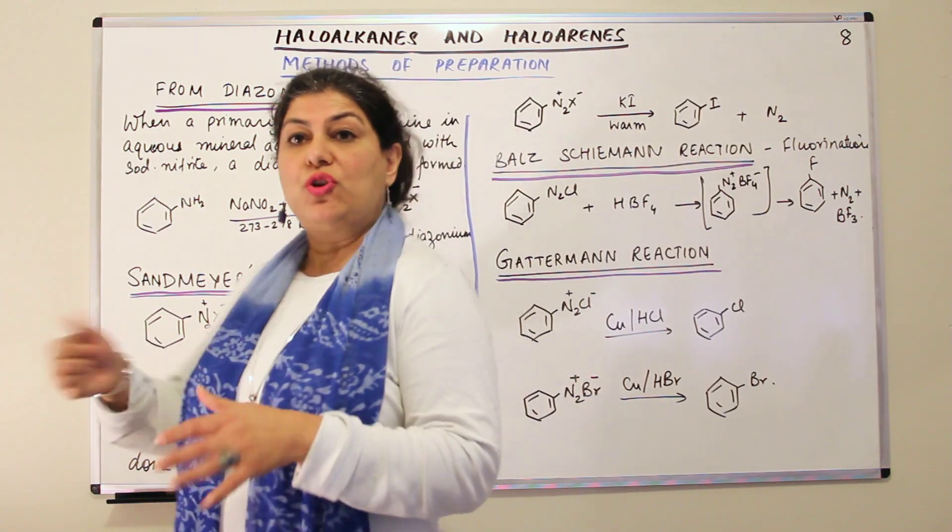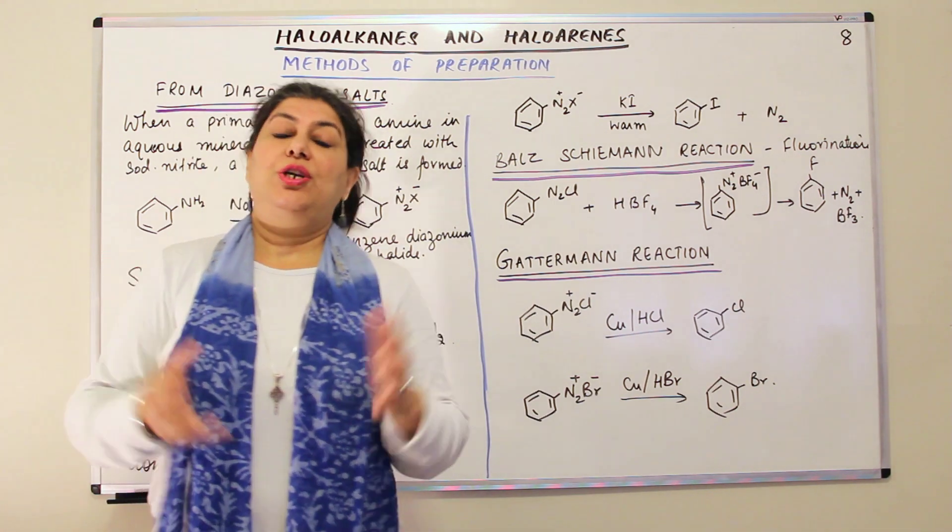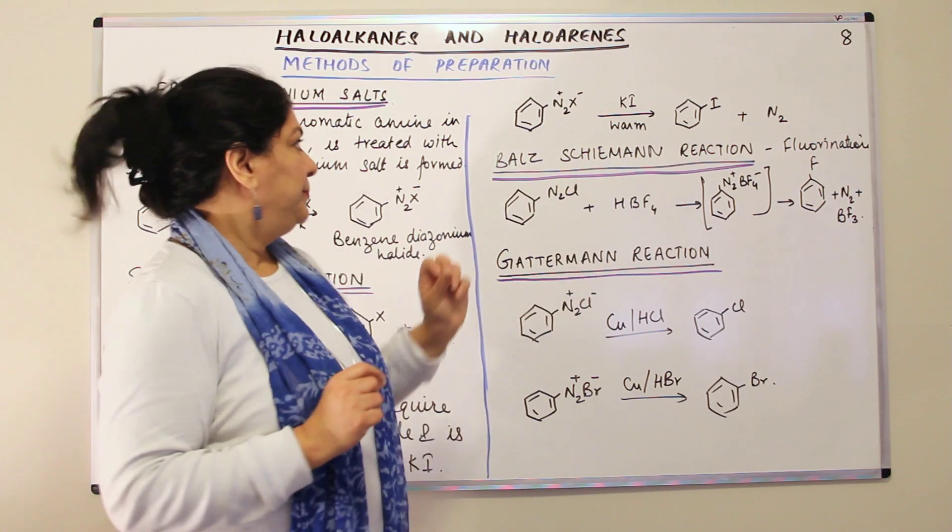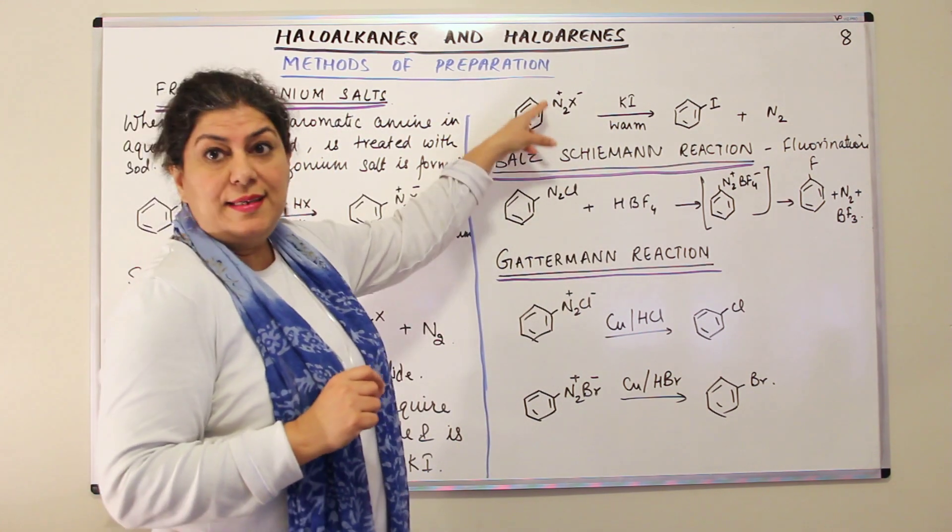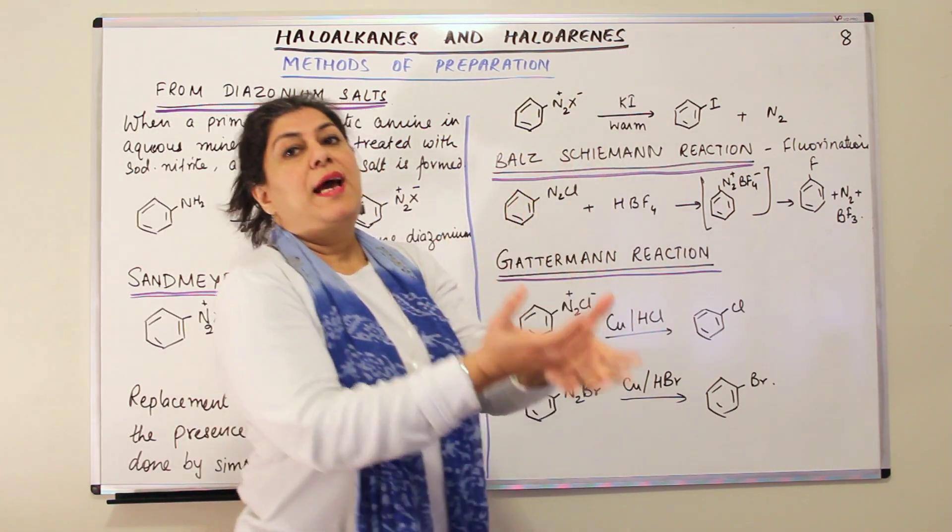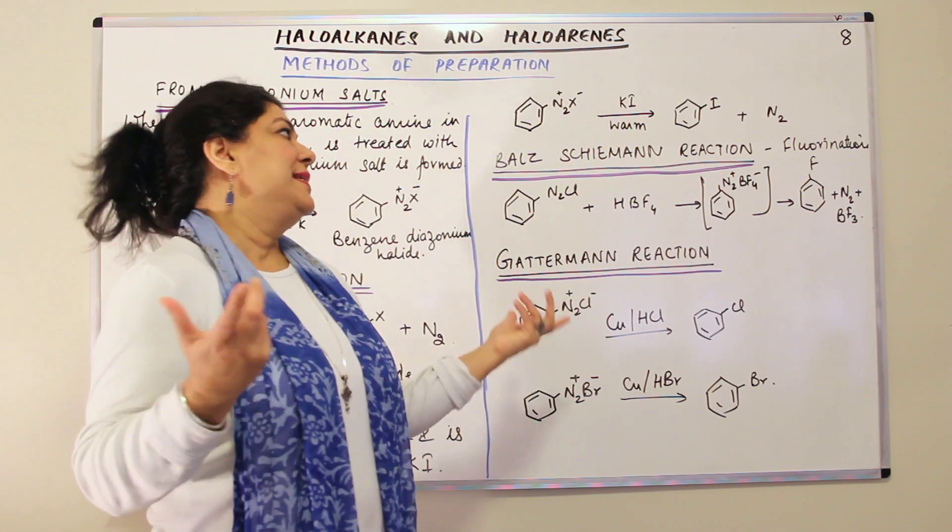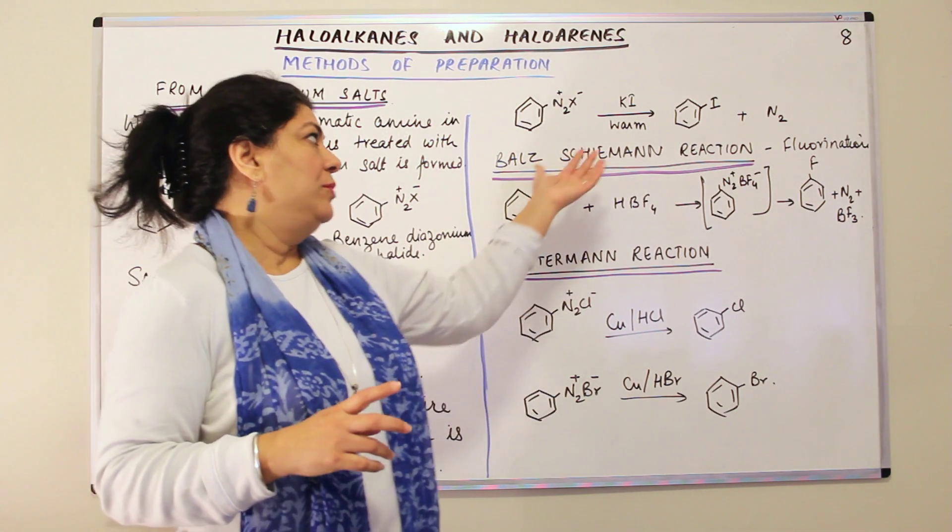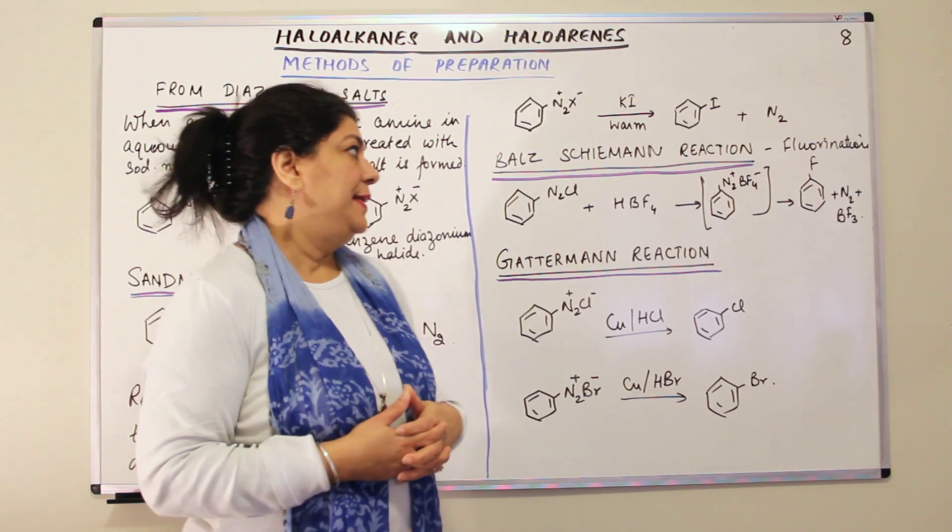If you just take the diazonium salt, shake it with potassium iodide, you will get the iodine derivative. That is, the iodobenzene will be obtained. So you have this, that is, the benzene diazonium salt, make it react with potassium iodide and the iodine from there itself is enough to, and in just a little warm temperature, you can carry out this reaction and you get the iodobenzene.